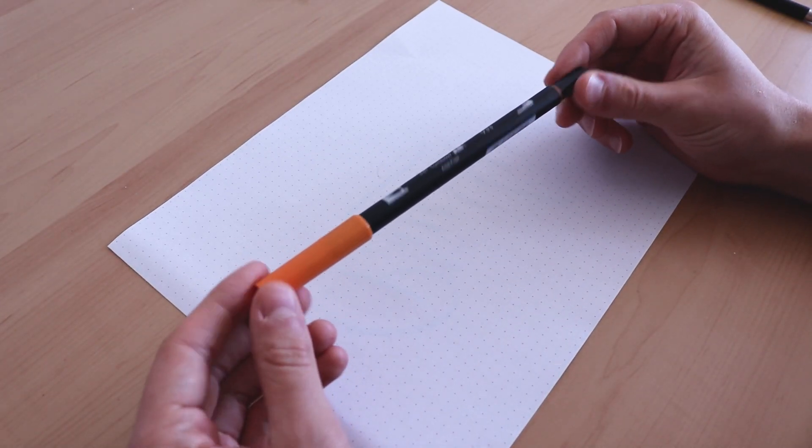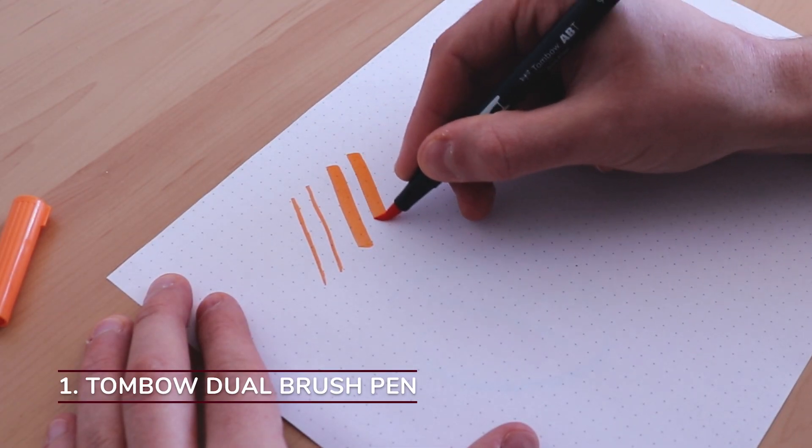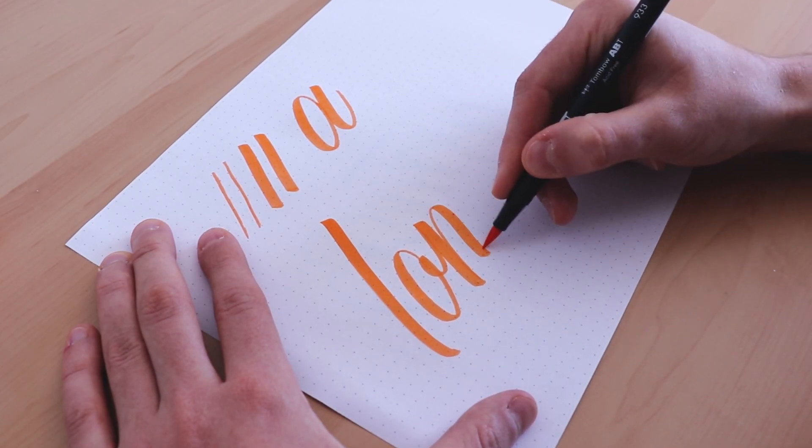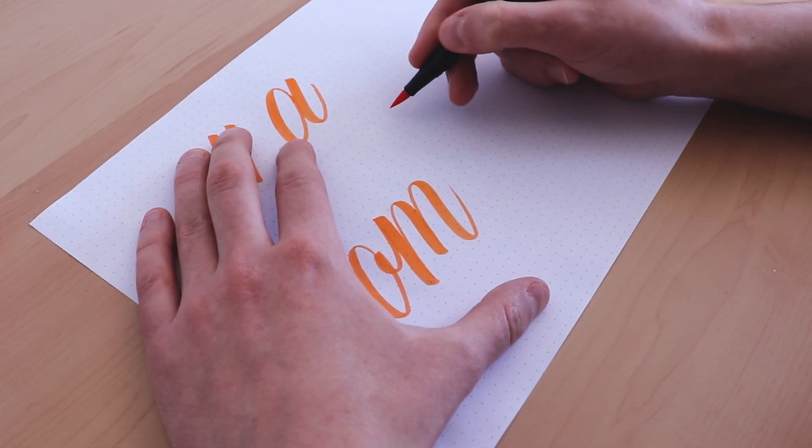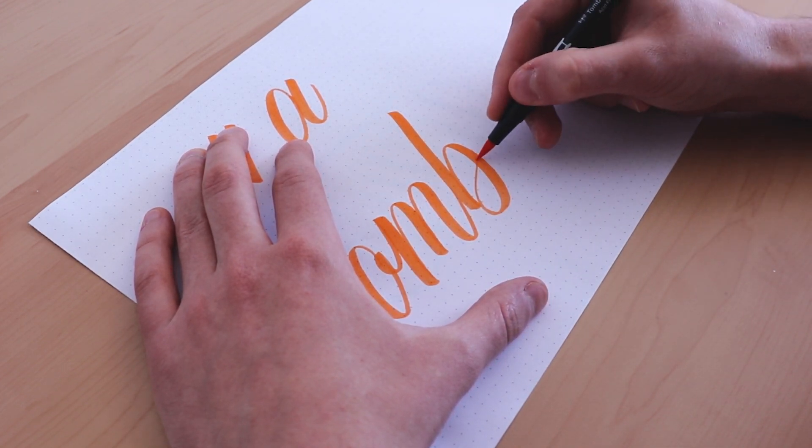Starting the list with a popular choice the Tombow Dual Brush Pen. The size of the nib is large, best for medium and large size brush calligraphy. The nib elasticity is medium leaning towards medium soft. It has a medium ink flow, not too dry and not too wet.